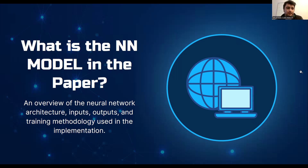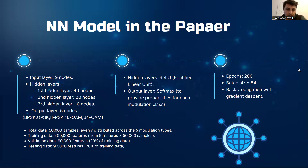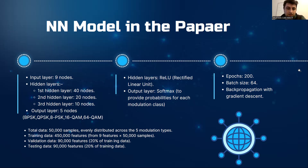Let's take a closer look at the neural network mentioned in the paper. This model has an input layer with nine nodes representing nine features. It includes three hidden layers with progressively smaller node counts — 40, 20, and 10. The output layer has five nodes corresponding to the five modulation types: BPSK, QPSK, 8PSK, 16QAM, and 64QAM.